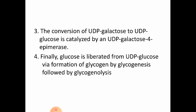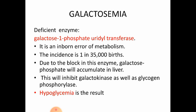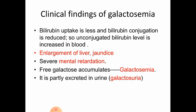Galactosemia is a defect in the enzyme galactose-1-phosphate uridyl transferase. It is an inborn error of metabolism, incident in 1 in 35,000 births. Due to the block of this enzyme, galactose-1-phosphate accumulates in the liver, which inhibits galactokinase as well as glycogen phosphorylase, leading to hypoglycemia.